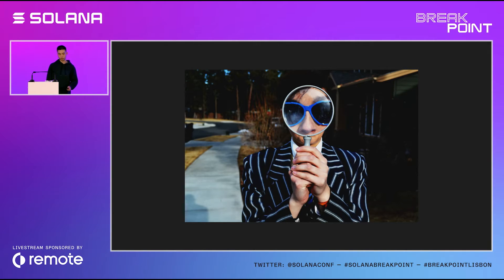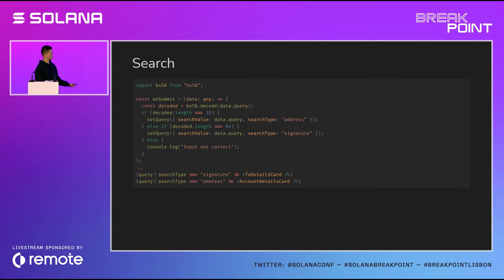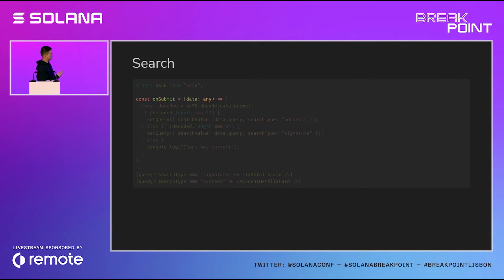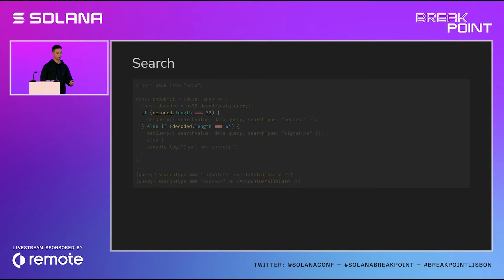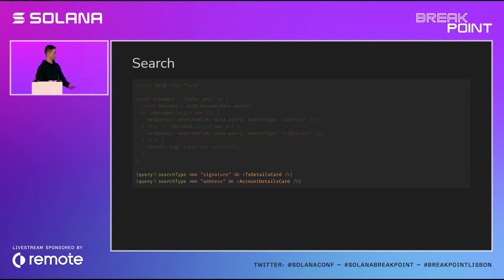Because we are building an explorer, we need to build the search. We build it with an onSubmit function that is called when the user inputs the query and hits the submit button. We import base58 encoding to decode the query, then evaluate the length — if it's 62 characters it's an address, and if it's 64 characters it's a signature. Then we show the component accordingly.